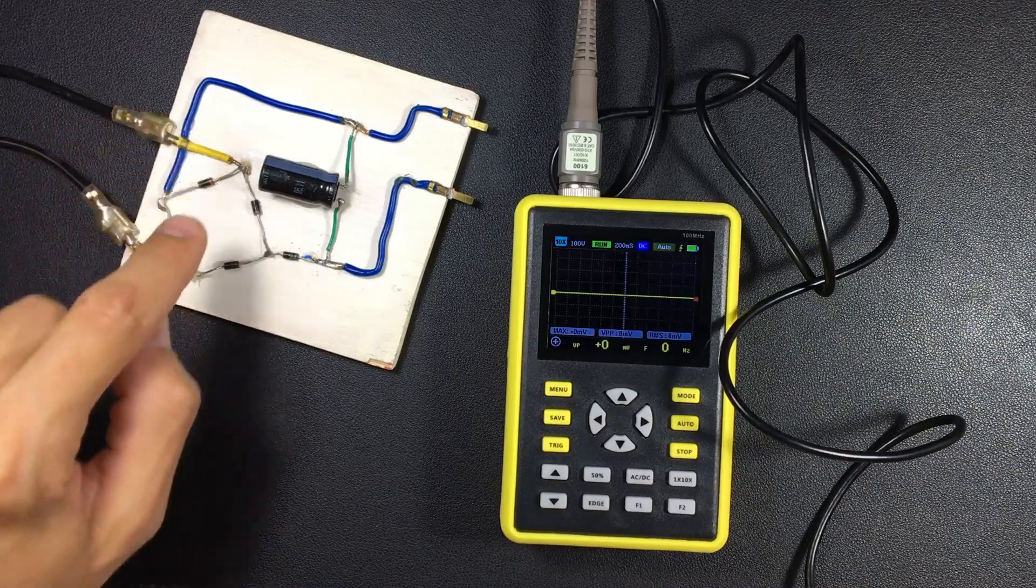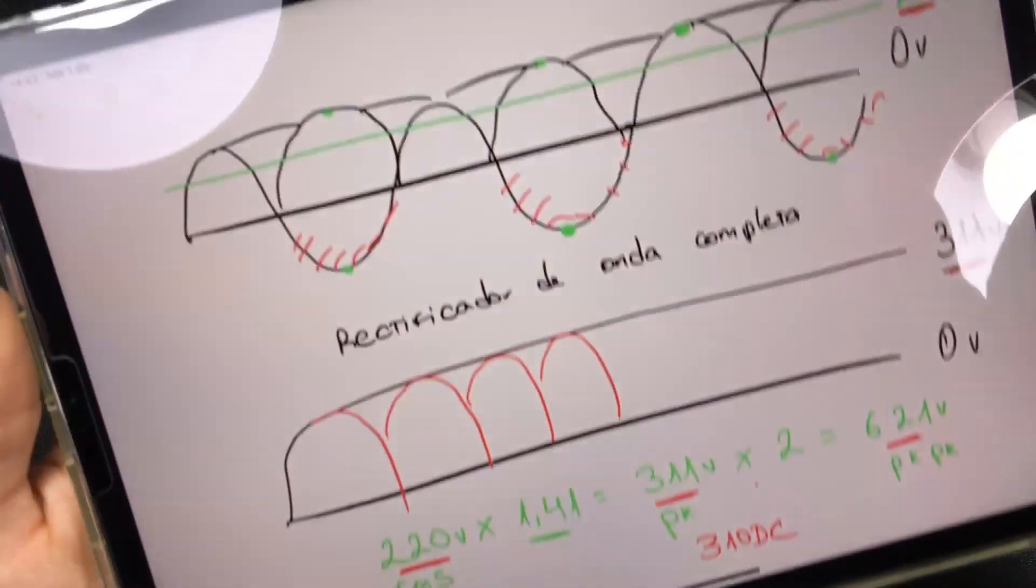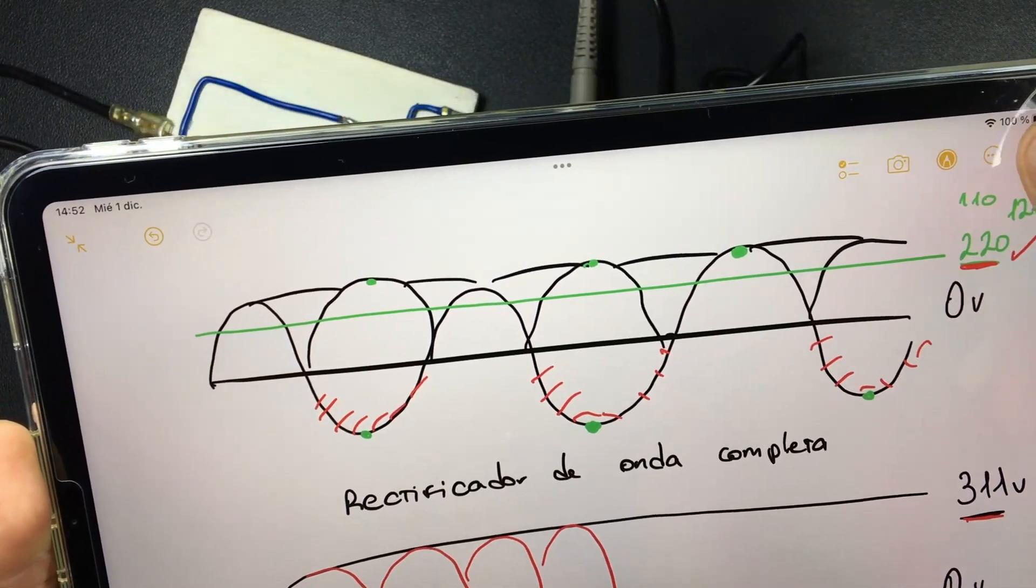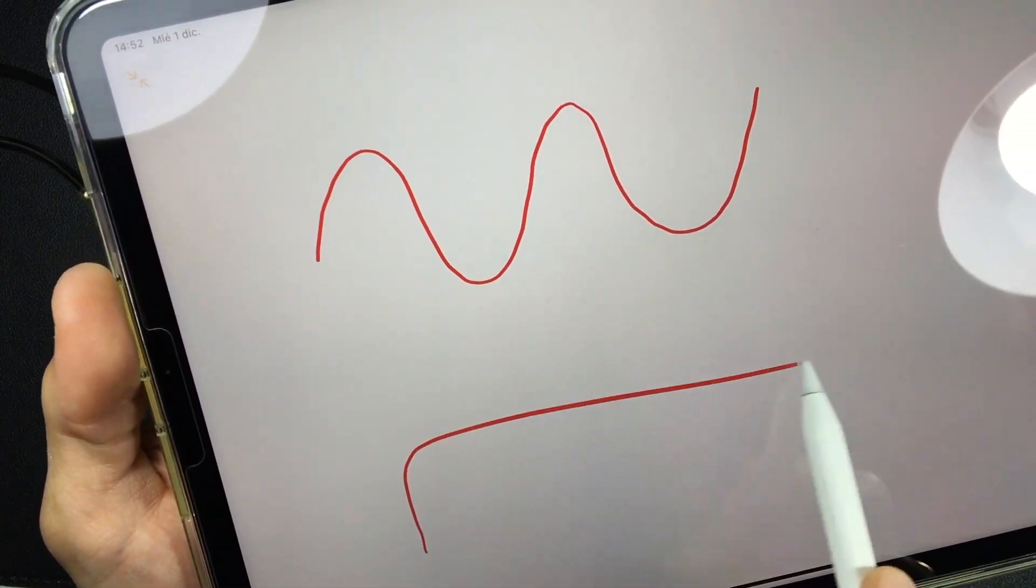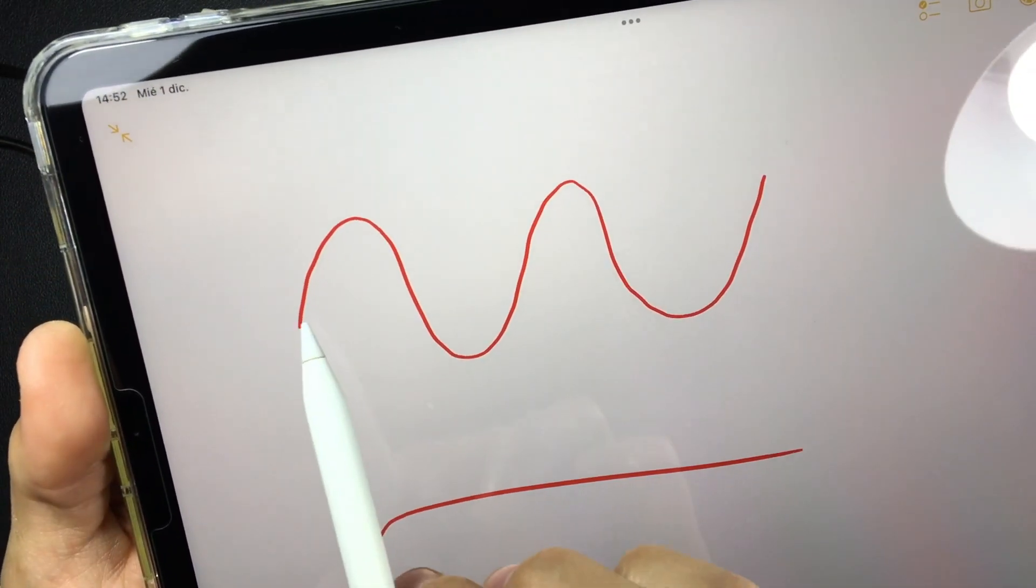Remember that what was happening here was a sinusoidal wave. We are going to graph it here. Remember that here we had a sinusoidal wave, and as soon as we pass the filter and the capacitor, we already have direct current.